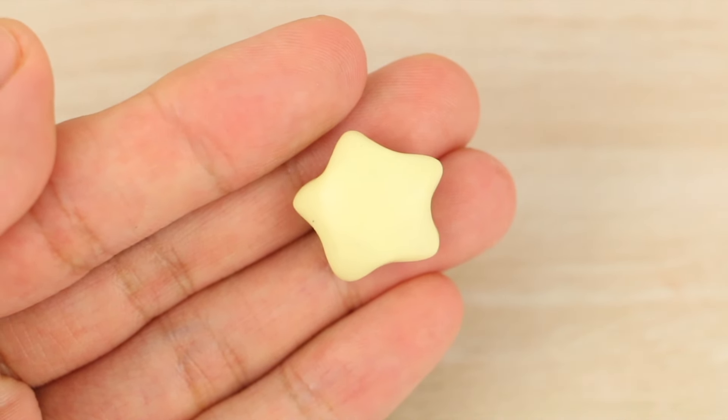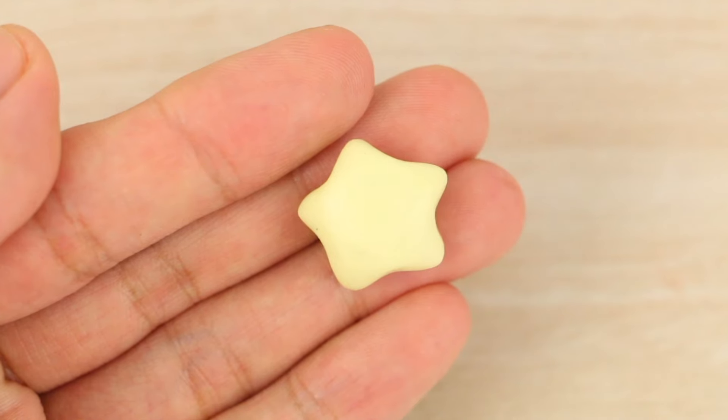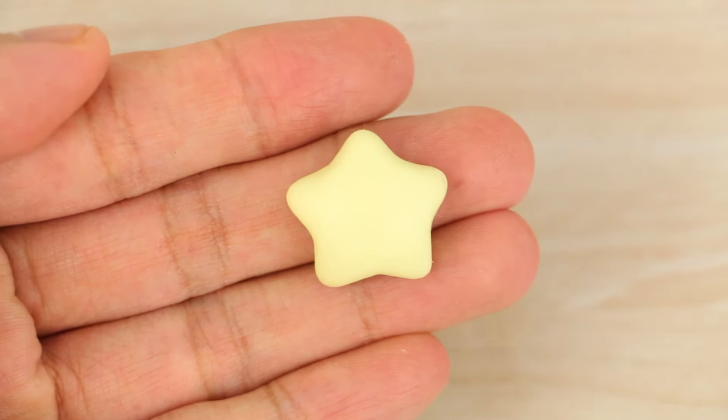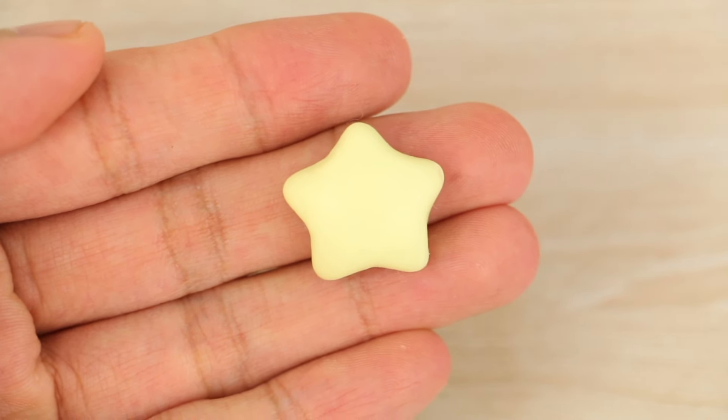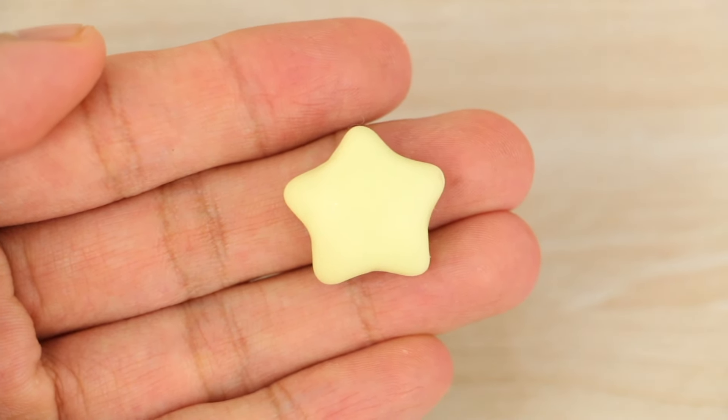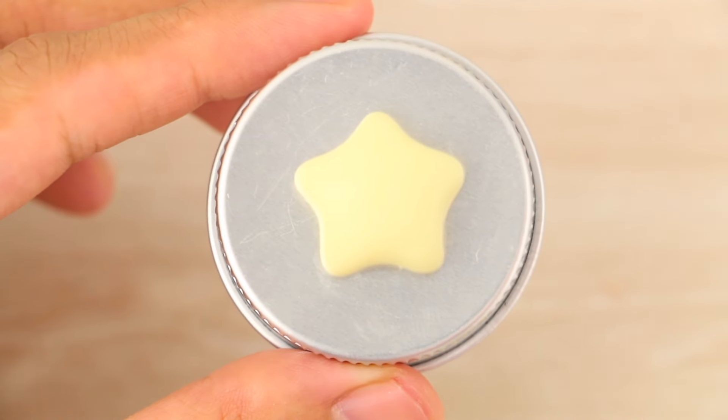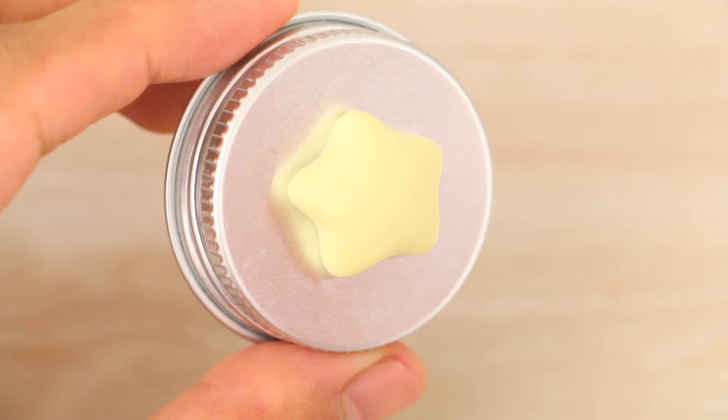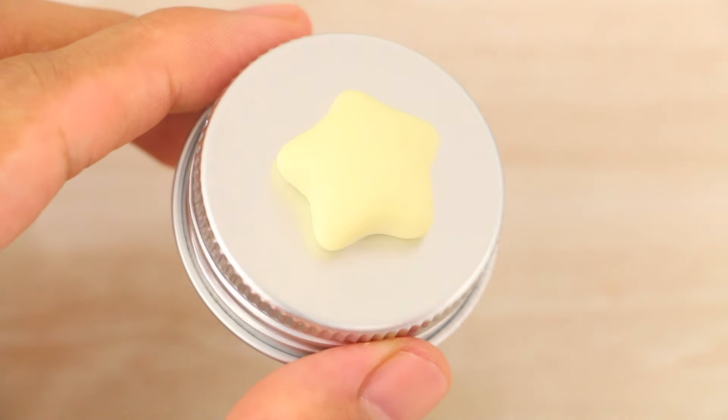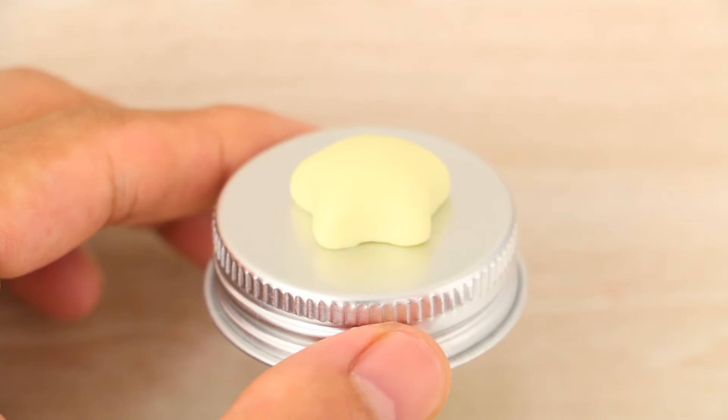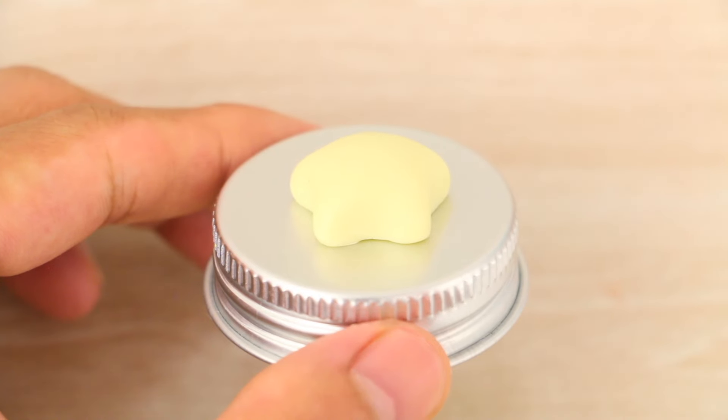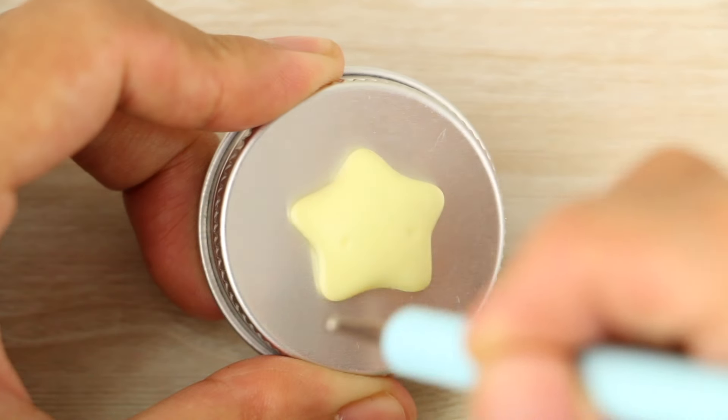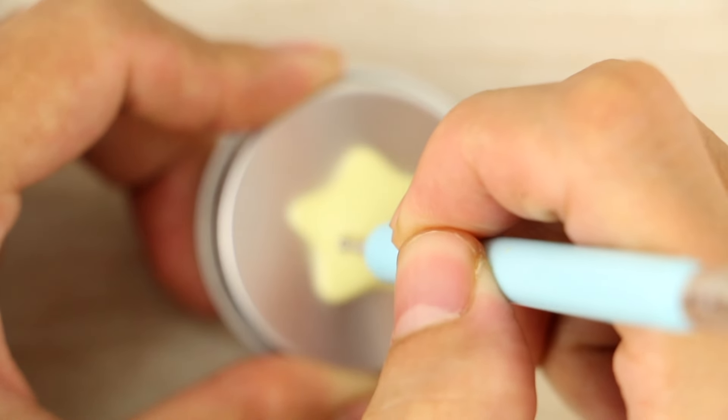Continuing to shape it until it's all even. Here's how it looks from different angles. Now it's time to add the face. I'm using a dotting tool to poke holes for the eyes.